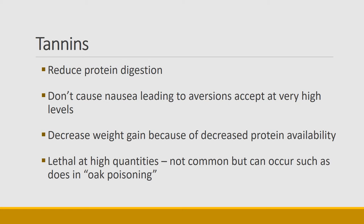What tannins do is decrease weight because they grab onto proteins in the gut — usually proteins of other forages, but even the gut tissue itself can get hardened by tannins. They're lethal in very high quantities, but this is not very common. One exception is oak poisoning — there are some very volatile compounds in oak tannins that can create death in animals.